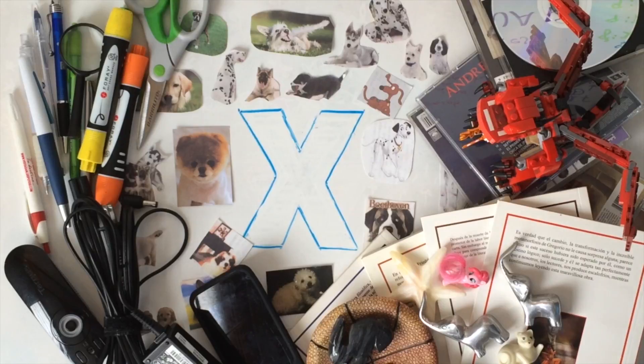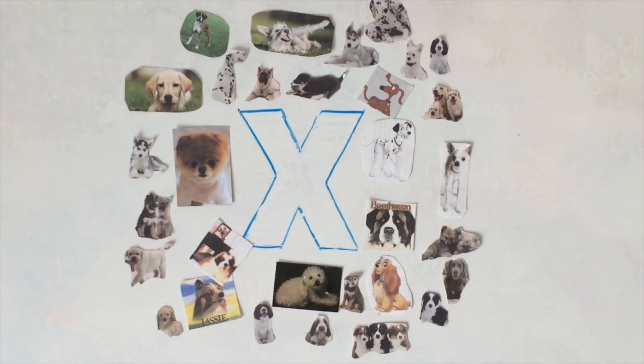If the book tells you X is a dog, that has narrowed the possible values of X. From the universe of all the stuff, we are now in the smaller universe of dogs.